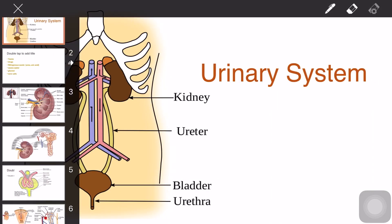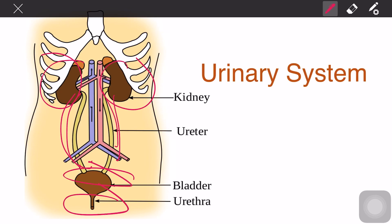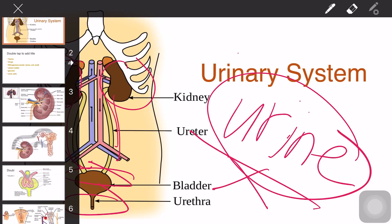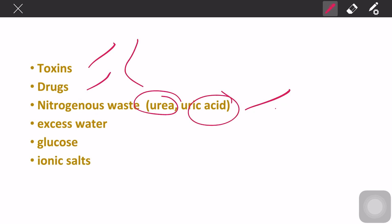The urinary system is composed of the kidneys — we have two kidneys — ureters, we have two ureters, the urinary bladder, and the urethra. The function of the urinary system is to filter blood to create urine as a waste product of the body. It also aids in the elimination of waste products from the blood, such as toxins, drugs, nitrogenous waste like urea and uric acid. Urea is the byproduct of protein metabolism.